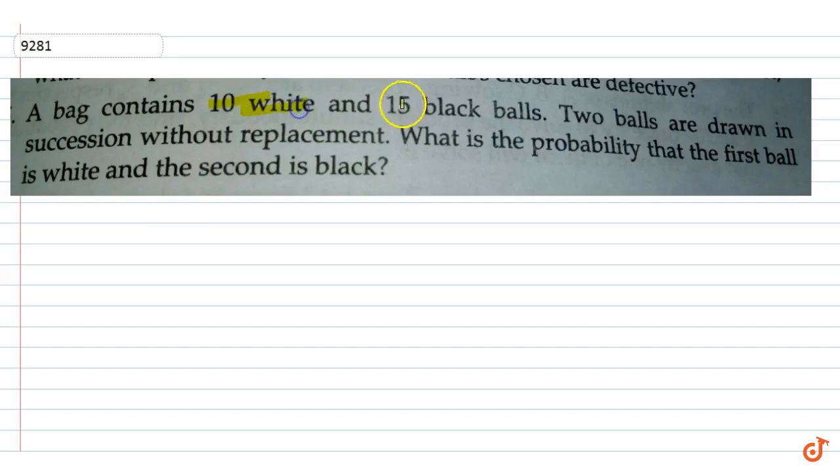A bag contains 10 white balls and 15 black balls. Two balls are drawn in succession without replacement. Find the probability that the first ball is white and second is black.